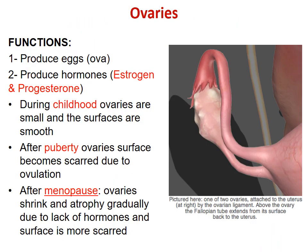The functions of the ovaries are to produce ova and to produce hormones like estrogen and progesterone. During childhood, ovaries are small and the surface is smooth. After puberty, the surface becomes more scarred due to ovulation — every month this ovary ovulates, and at the point of rupture of the outer surface a scar develops. A female in the fertile period between 13 to 45 years develops a new scar each month from this rupture.